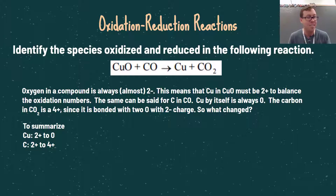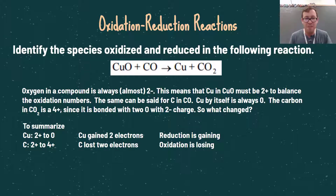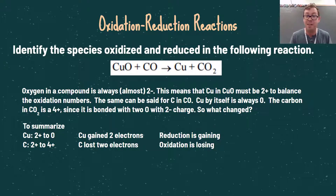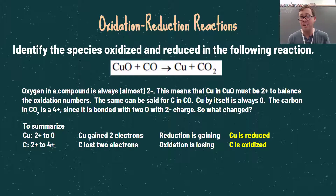We need to figure out which species gained electrons and which lost electrons. Copper gained two electrons — since electrons have a negative charge, that changes the oxidation number from +2 to 0. Carbon, on the other hand, lost two electrons because it goes from a +2 oxidation state to a +4 oxidation state. Because copper gained electrons, we say it is being reduced — remember, OIL RIG, reduction is gaining. Because carbon lost electrons, we say carbon is oxidized. So copper is reduced and carbon is oxidized.